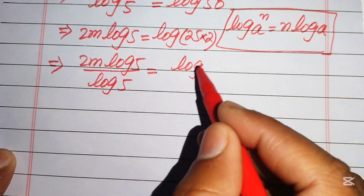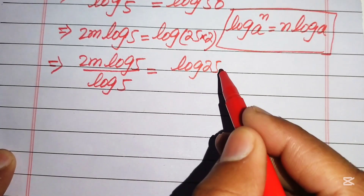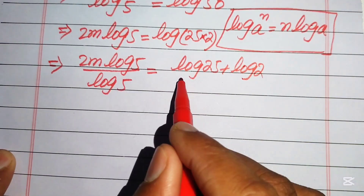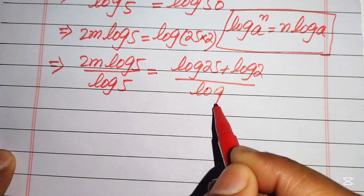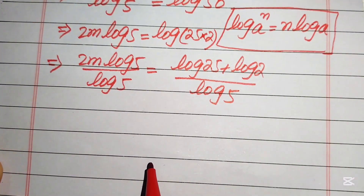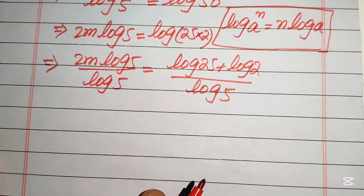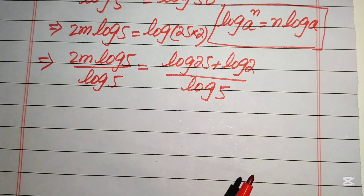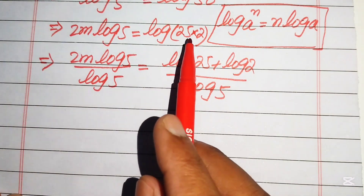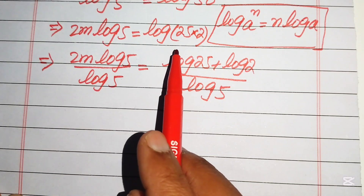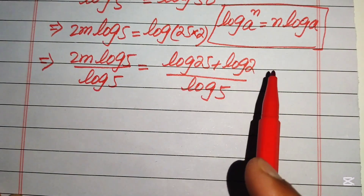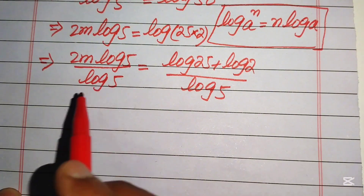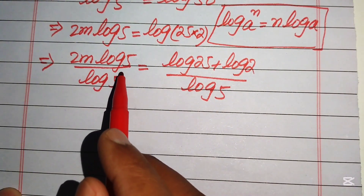We apply the log product property: log(25 times 2) equals log(25) plus log(2). So the right-hand side becomes log(25) plus log(2), all divided by log(5).